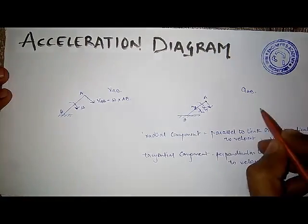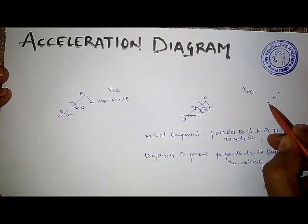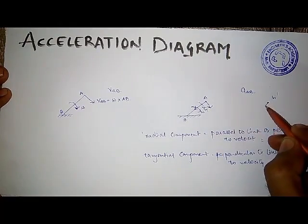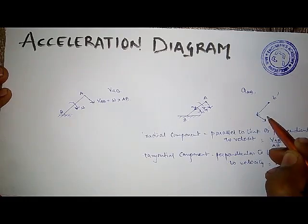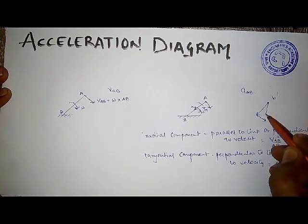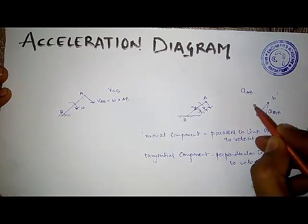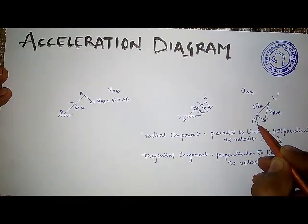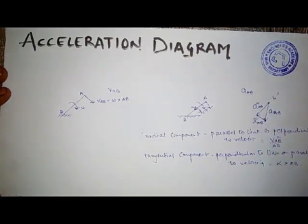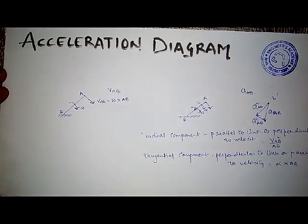The acceleration of A with respect to B is the resultant of the radial component and the tangential component. Since B is the fixed point, we draw point B (B-dash), then draw the radial component first followed by the tangential component. The resultant directs the acceleration of A with respect to B — this part is radial, and this part is tangential. This was a basic description of the acceleration diagram; we will now move to a question.